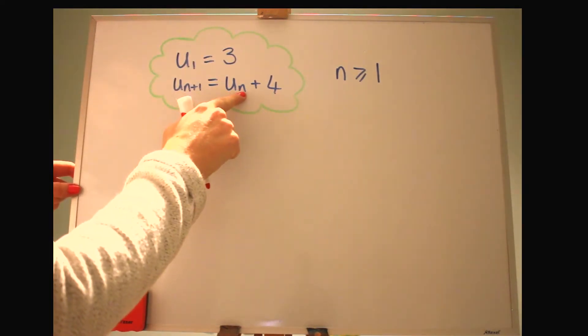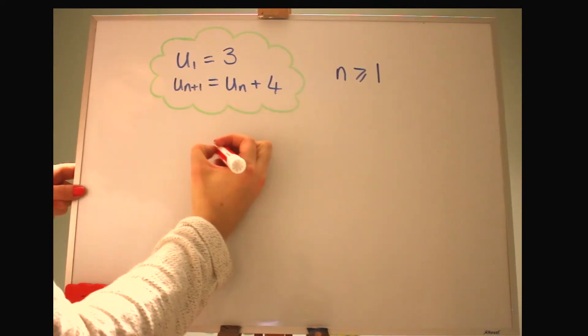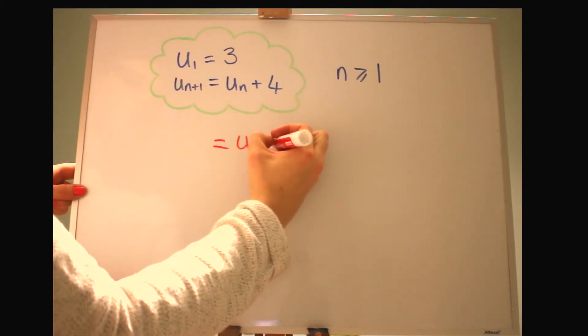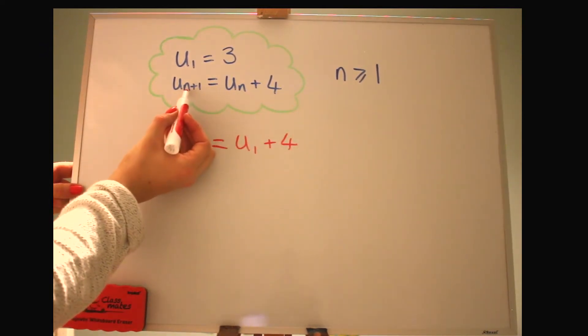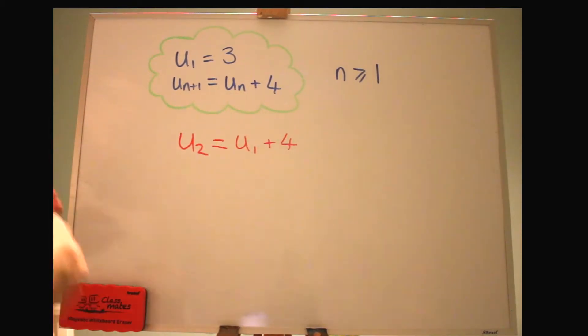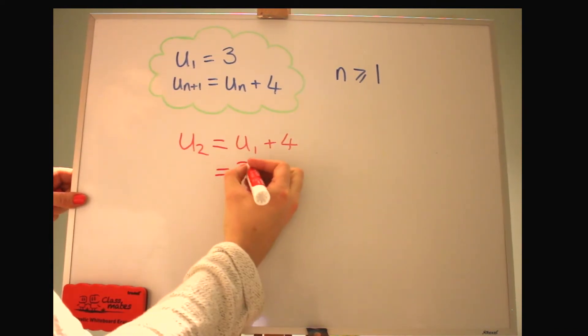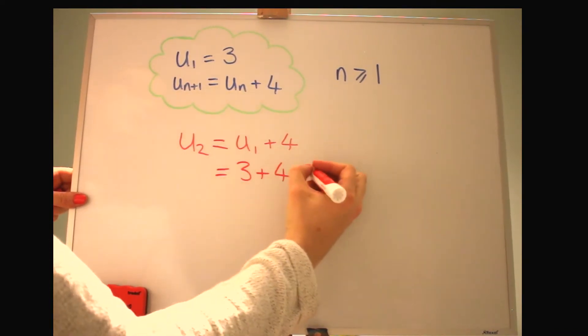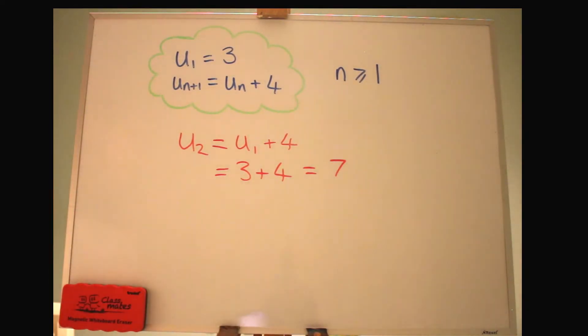So if we let n be u1 first of all and put that in there, then u of 1 plus 4 would give us u of n plus 1. If n is 1, then n plus 1 is 2, so that gives us u2. And that's the second term of the sequence. So u1 here is 3, so plus 4 to that we get 7. So the second term of the sequence is 7.